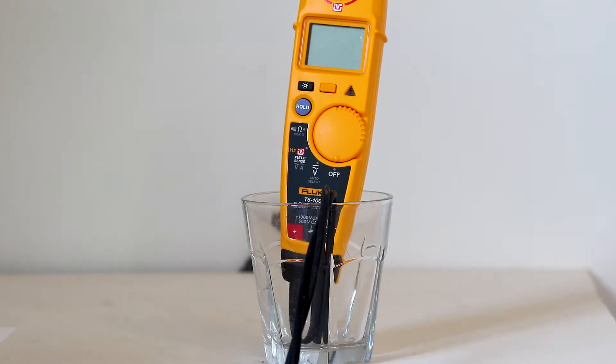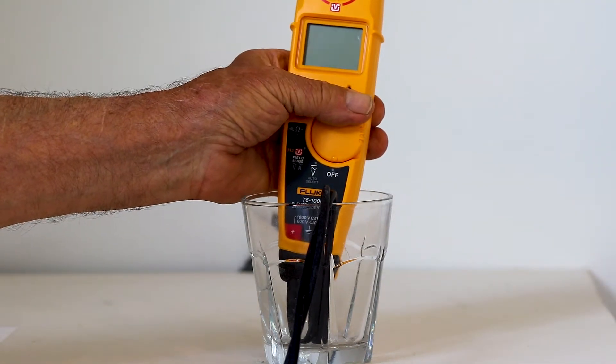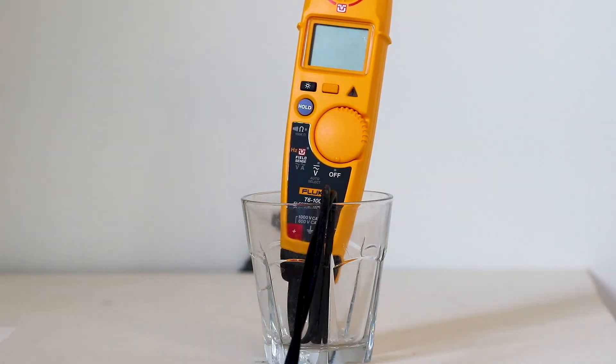Another fine Fluke instrument is the T6-1000 electrical tester. Like the 287 multimeter, it is okay for a thousand volts in a Cat 3 location and 600 volts in Cat 4 where there is greater available current. The maximum current rating is 200 amps and the tester will accommodate a four-aught conductor.